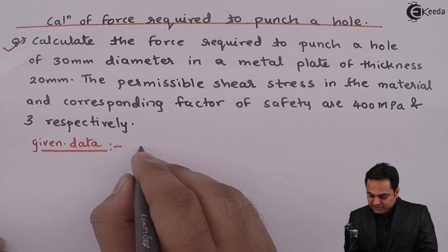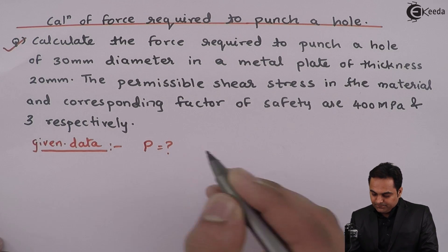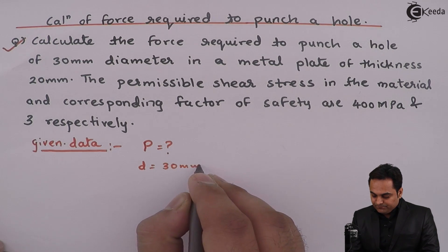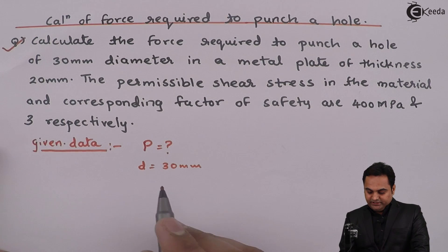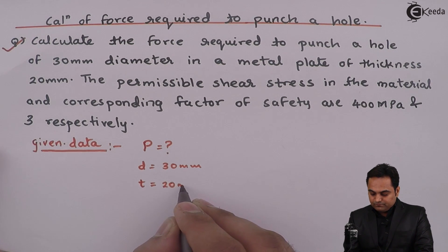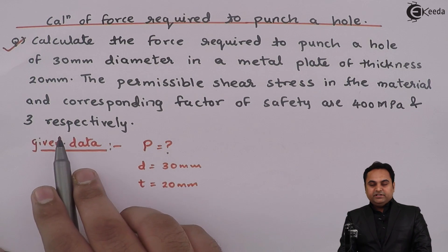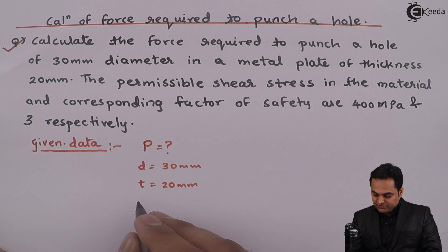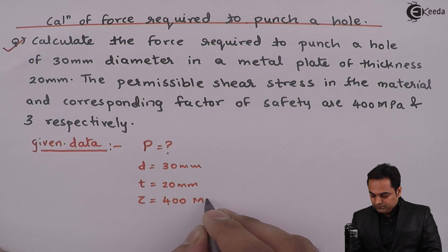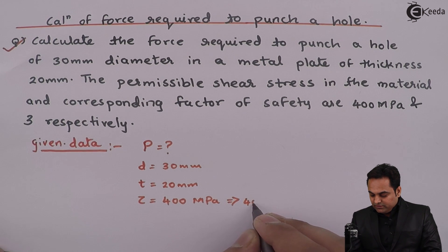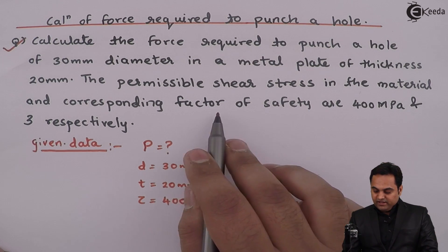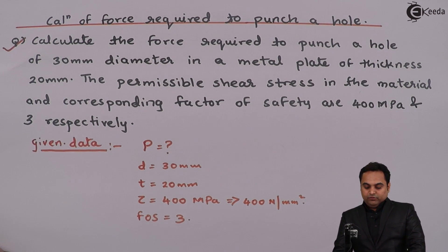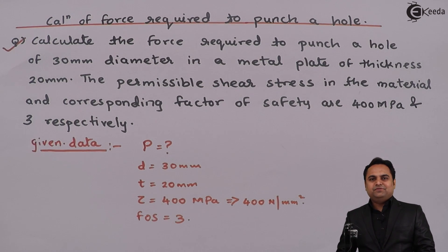Let us write the given data. The force to find is denoted by P. Diameter of the hole is 30 mm. Thickness of the plate is 20 mm. The permissible shear stress, denoted by tau, is 400 mega Pascal, that is 400 Newton per mm square. Factor of safety (FOS) is 3.